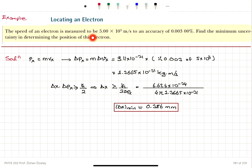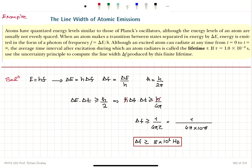In the first example, where the electron's speed was non-relativistic, we calculated the uncertainty in momentum as the uncertainty in speed multiplied by m, then used Heisenberg's uncertainty principle — delta x is greater than or equal to h-bar over 2 times delta px — to get the answer. For atoms with quantized energy levels, transitions correspond to a delta E that gives h times delta f, the line width. Delta f equals delta E over h. Using energy-time uncertainty and knowing the lifetime tau — the average time interval after excitation during which an atom radiates — we find delta f is greater than or equal to 1 over 4 pi tau.